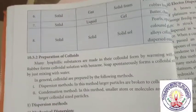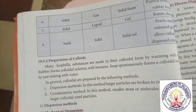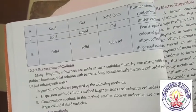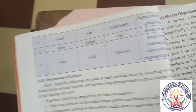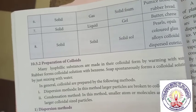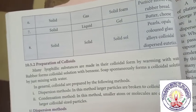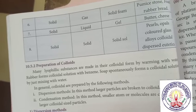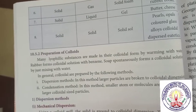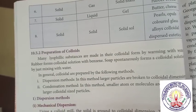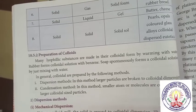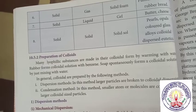Next, preparation of colloids. Many lyophilic substances are made in their colloidal form by warming with water. Rubber forms colloidal solutions with benzene and some substances spontaneously form a colloidal solution by just mixing with water. In general, colloids are prepared by the following methods: dispersion methods, in which larger particles are broken to colloidal dimensions, and condensation methods.